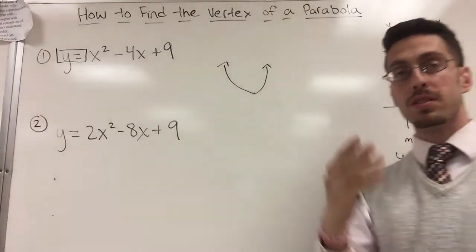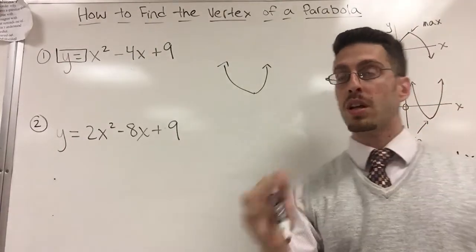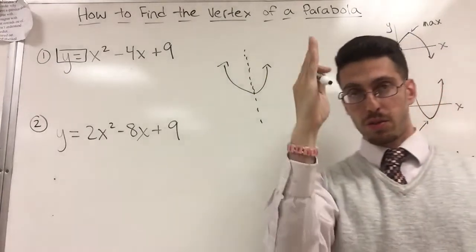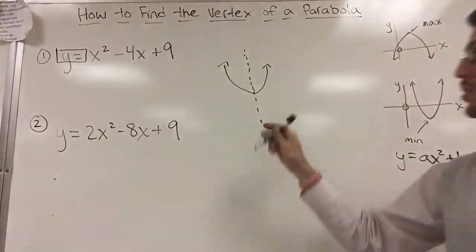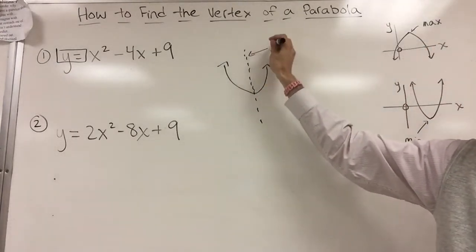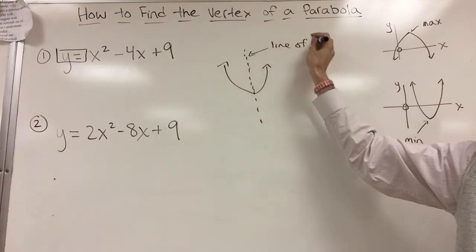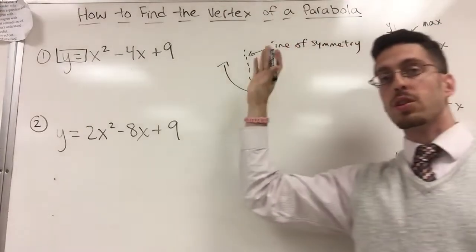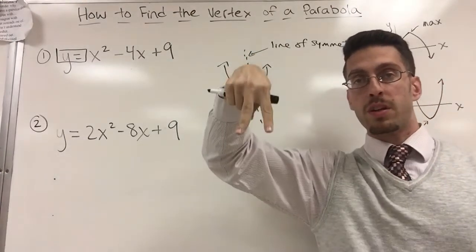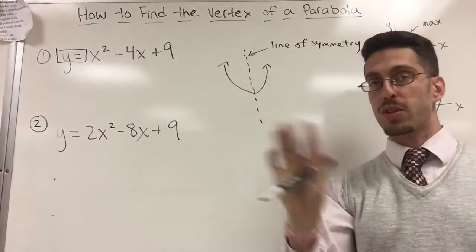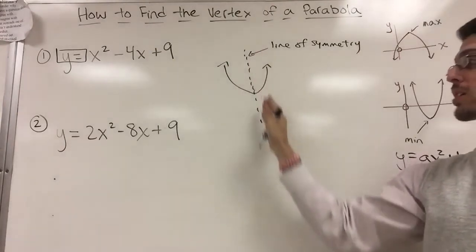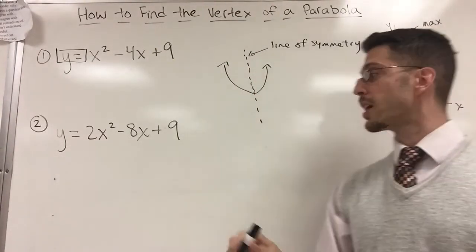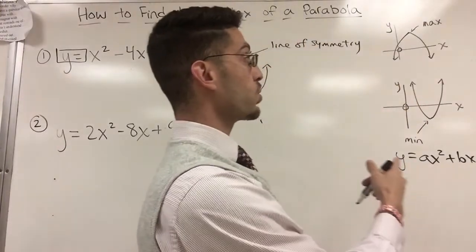Now the thing about a parabola is it's symmetrical. There's a middle. In the middle there's what's considered a line of symmetry. So this dotted line I just drew is considered the line of symmetry. The line of symmetry is always a vertical line because the u is either up or down. We're not talking about sideways u's just yet. So here's my line of symmetry is vertical, and vertical lines are in the form of x equals something.